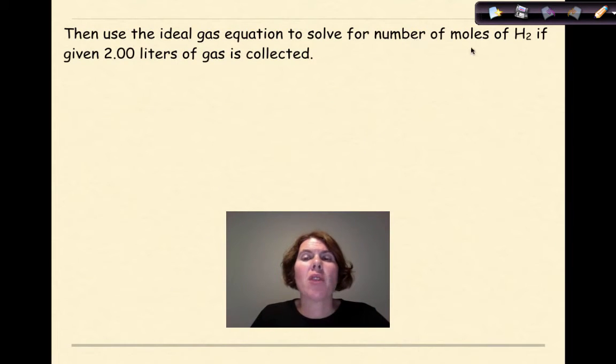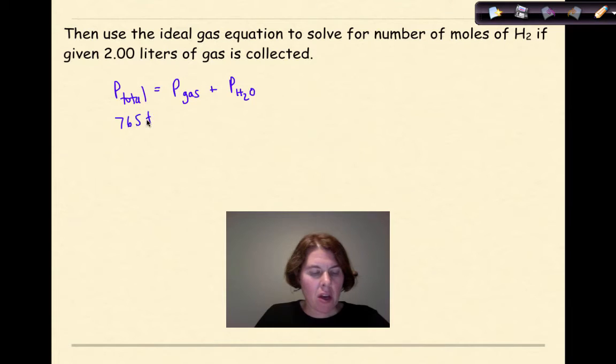Then we're going to use the ideal gas equation to solve for the number of moles of hydrogen gas if it's given that 2 liters of gas is collected. So we're going to take P total, pressure total, which is equal to pressure of our gas plus the pressure of the water vapor. The first thing that we want to do is get basically the pressure of our gas. In this problem, it's said that 765 torr is our total pressure. We're going to solve for the pressure of the gas, and I told you that the pressure of the water vapor at 26 degrees Celsius is 25.21 torr. So what we're going to do is subtract 25.21 torr from 765 torr, and that will give us the partial pressure of our gas, which is 739.79 torr.